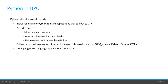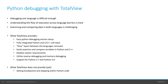We currently support Swig, ctypes, and Pybind. Debugging mixed language applications is not easy because debugging a single language is difficult enough. It's important to understand the flow of execution across language barriers and to examine and compare data in both languages. TotalView provides you with an easy Python debugging session setup.